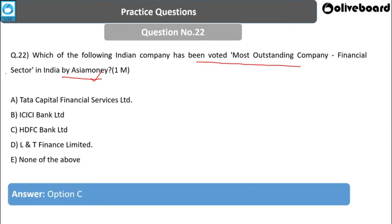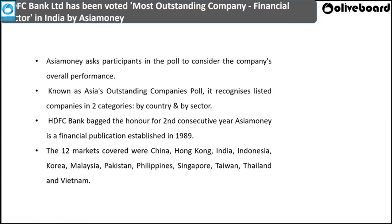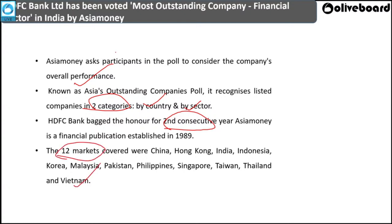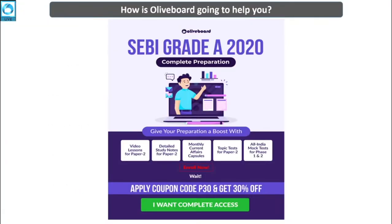Options include Tata Capital, ICICI, HDFC, L&T Finance. The answer is HDFC. HDFC was voted the most outstanding company in the financial sector by Asia Money. Asia Money asks participants to consider overall company performance in two categories — country-wise and sector-wise. HDFC won this honor for the second consecutive year. Asia Money covers 12 markets across Asia: China, Hong Kong, India, Indonesia, Korea, Malaysia, Pakistan, Philippines, Singapore, Taiwan, Thailand, and Vietnam.